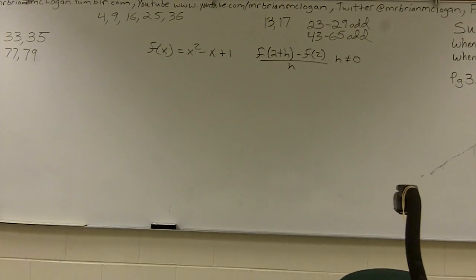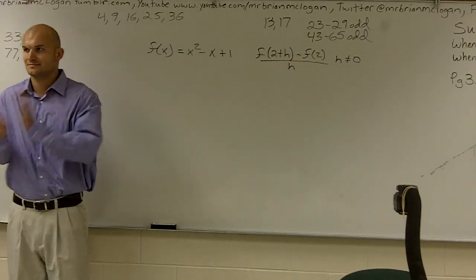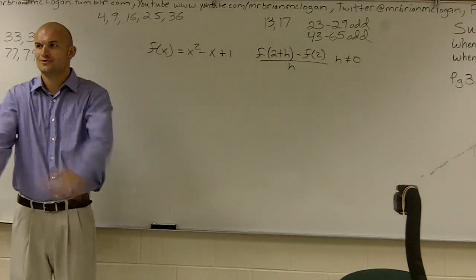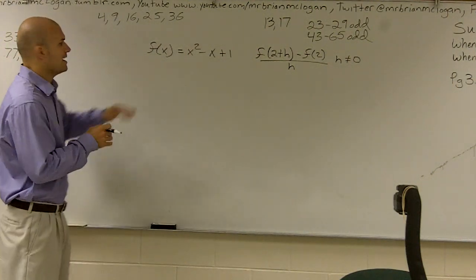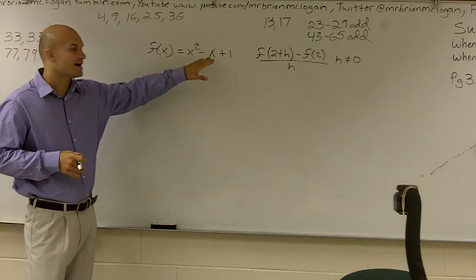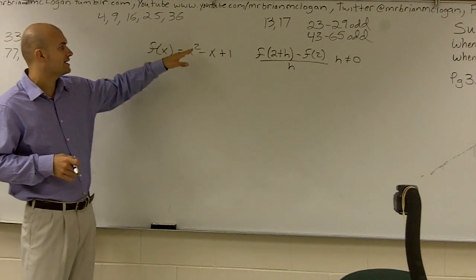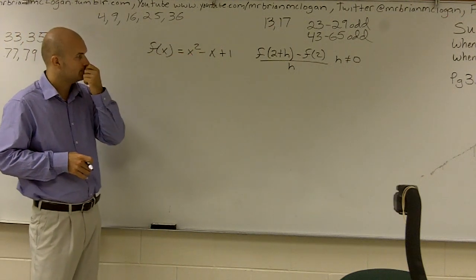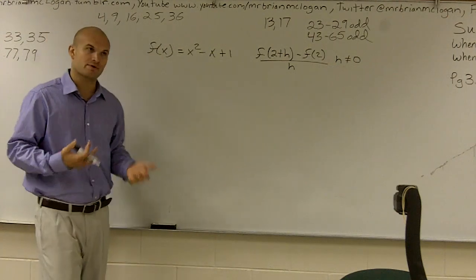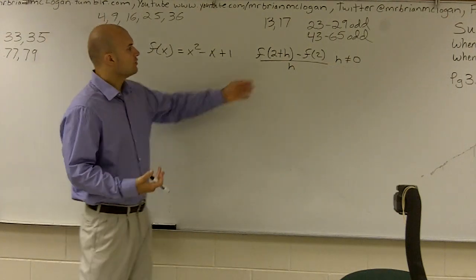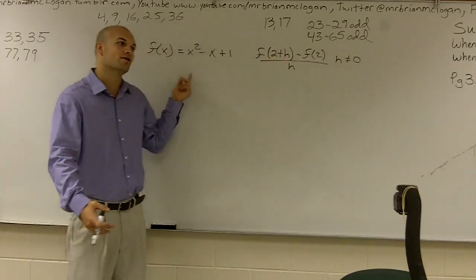So we have a function f of x, and the function for f of x is equal to x squared minus x plus 1. We've already worked on evaluating functions, and when we evaluated functions, remember we found out what the value was and we plugged that value into our function.